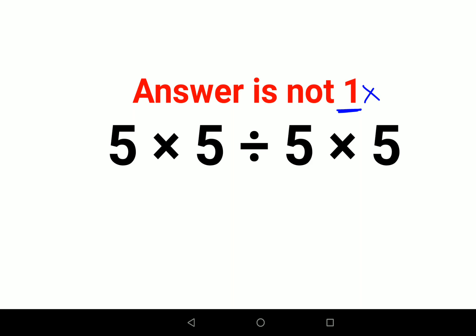Why like that? Because they thought that 5 into 5 is 25 and again 5 into 5 is 25. So when you divide both of them, the answer comes out to be 1. But that is completely incorrect.